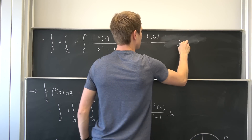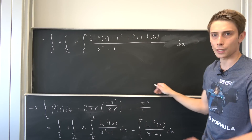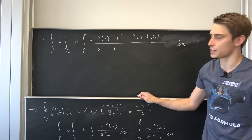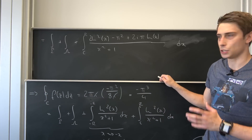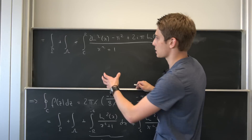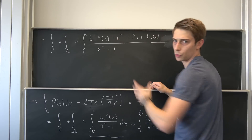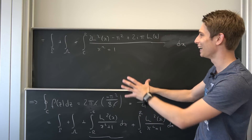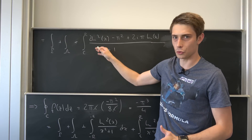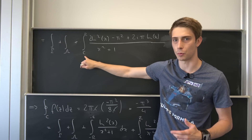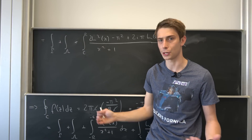That looks quite complex. But you see, those natural log squared terms are the same — we can bring them together, giving 2 times our original integral. In order for us to get to the final result, we need to let epsilon approach 0 and r approach infinity.